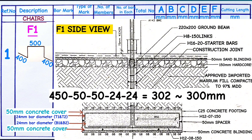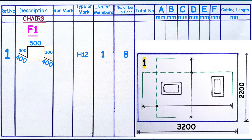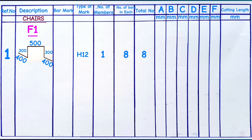Back to our table: the height is 300 millimeters on each side. There is no bar mark since chairs are not always catered for in structural drawings. The type of mark is H12, using the same bar thickness as the base. Number of members is 1 footing F1, number of bars in each is 8, giving a total of 8 pieces. A is 400mm, B is 300mm, C is 500mm, D is 300mm, and E is 400mm. Adding all sides A through E gives a total cutting length of 1.9 meters.